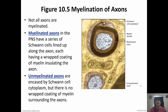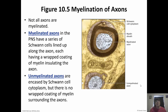Not all axons are myelinated. Myelinated axons in the peripheral nervous system have a bunch of Schwann cells lined up along the axon, each wrapping the axon in that insulating myelin sheath, with nodes of Ranvier between them so the impulse can jump from node to node. Unmyelinated axons are also encased by the Schwann cell's cytoplasm, but they don't have that myelin sheath or coating surrounding the axons.